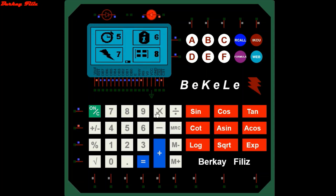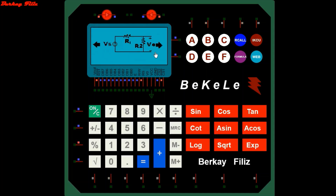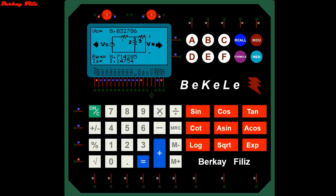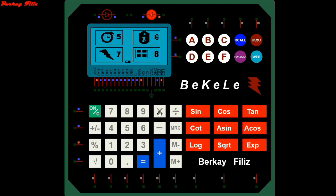Now let's go to the series circuit analysis section. An animation is displayed on the screen. Then a menu page opens where you can choose between four different simple circuit configurations. After selecting the circuit type, we enter the source voltage and resistor values. It prints the current flowing through the main arm, the equivalent resistance, and the load voltage values on the screen.